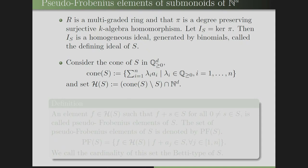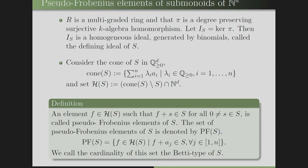Consider the cone of S in the rationals, defined as the rational linear combinations of generators of the semi-group. Set H(S) = cone(S) minus S, intersected with N^D. An element F from H(S) is called a pseudo-Frobenius element if F plus S belongs to S for all non-zero S from the semi-group. This set is denoted PF(S), and the cardinality of this set is called the Betty type of S.